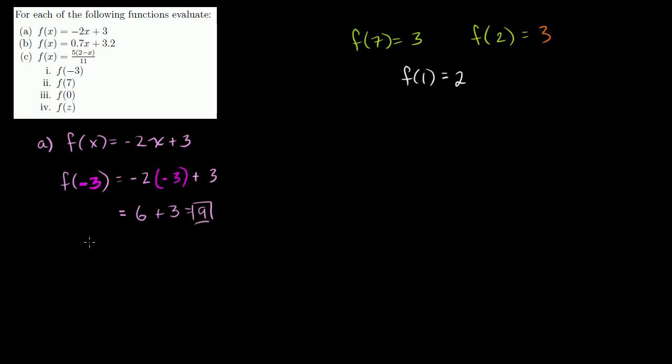What about f of 7? I'll do the same thing. I'll do 7 in yellow. f of 7 is going to be equal to negative 2 times 7 plus 3. So this is equal to negative 14 plus 3, which is equal to negative 11.